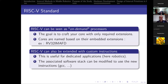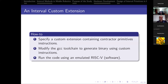RISC-V comes with a very complete software stack. We can use GCC and modify it to take into account our new instructions, immediately gaining C bindings over those primitives. In the article I mentioned, we show in-depth how to specify a custom extension set containing contractor primitive instructions, how to modify GCC to produce binaries using interval instructions, and we run this in an emulated RISC-V — everything in software — successfully running the initial localization problem I showed at the beginning.